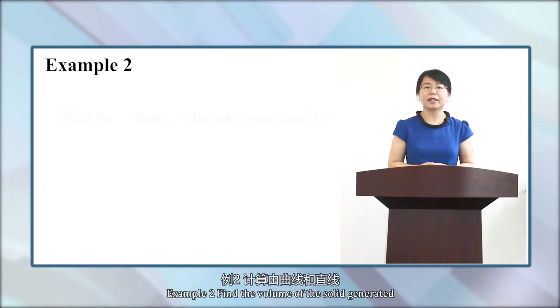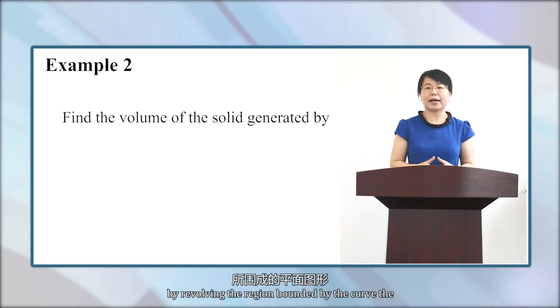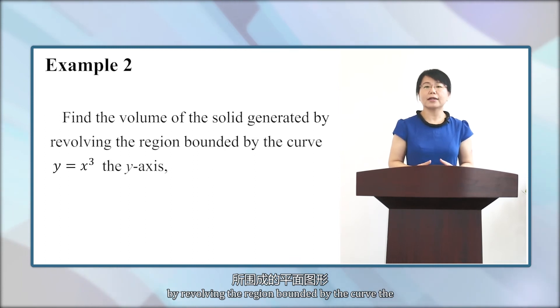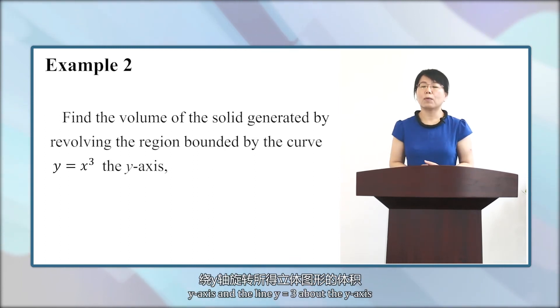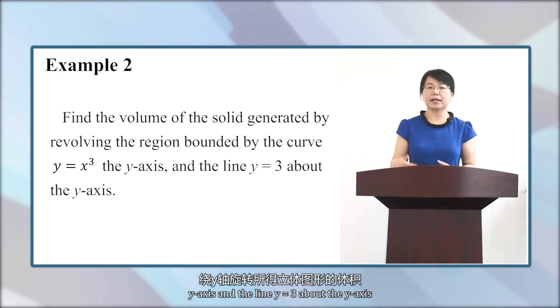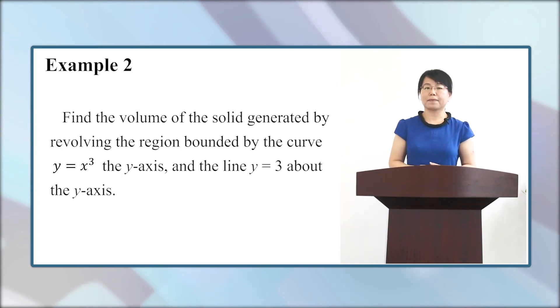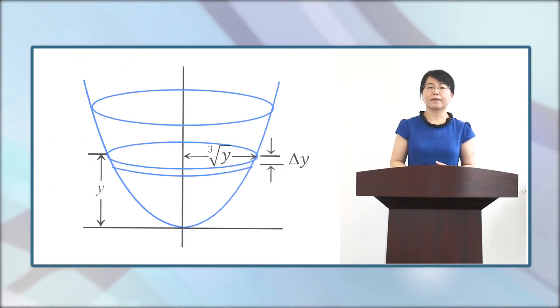Example 2. Find the volume of the solid generated by revolving the region bounded by the curve y equals x³ and the y-axis and the line y equals 3 about the y-axis. Now let's see the picture.